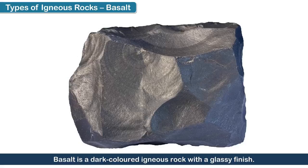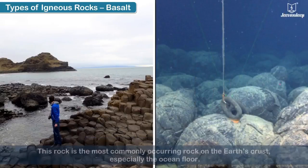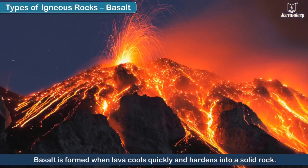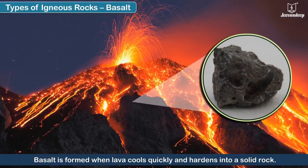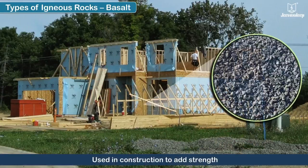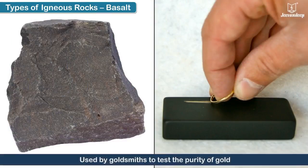Dentists use a powdered form of pumice to polish teeth. Basalt is a dark-colored igneous rock with a glassy finish. This rock is the most commonly occurring rock on the Earth's crust, especially on the ocean floor. Basalt is formed when lava cools quickly and hardens into a solid rock. It is commonly used in construction to add strength, and is also used by goldsmiths to test the purity of gold.